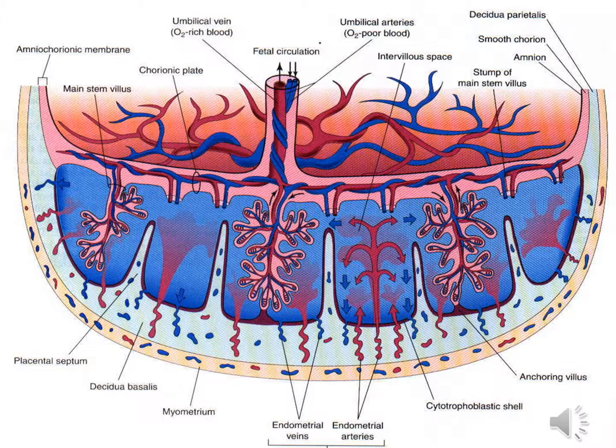The placenta peaks around 36 weeks, after which there is an increase in edema, fibrosis, fibrin deposits, and avascular villi. It is dependent on maternal blood supply.